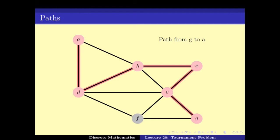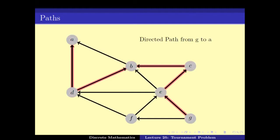In an undirected graph we do not care about the direction of the edges. But if the graph is directed, following a path becomes constrained. For example, a path g, e, c, b, d, a is problematic in a directed graph if the edge from b to d does not exist in that direction. However, there is a path from g to a in this directed graph via a valid directed route.